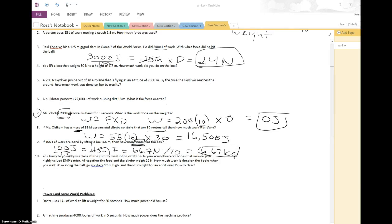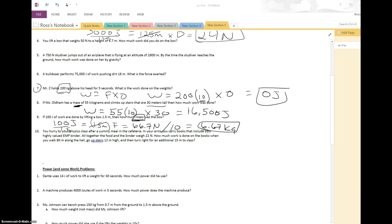Number 10, right there. You're hurrying to physics class, as you always do, because you're so excited to work on physics. Altogether, the food and the binder weigh 22 newtons. So they gave you the force. It's not mass this time. That's nice. How much work is done in the books when you walk 80 meters along the hall, go upstairs 12 meters high, and turn right for an additional 15 meters to class?